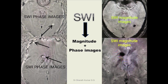As discussed earlier, susceptibility-weighted imaging has both magnitude and phase images. This magnitude image shows blooming, so it can be calcification or blood product, but on the filtered phase image the same area shows bright signal — or opposite signal to the magnitude image — suggesting it has calcification.